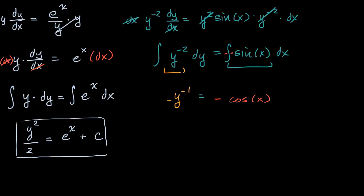Or another way to write this, I could multiply both sides times a negative one. And so these would both become positive. And so I could write one over y is equal to cosine of x. And actually let me write it this way, plus c. Don't want to forget my plus c's.